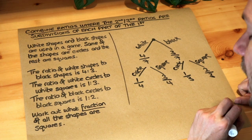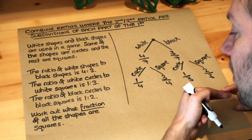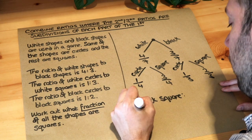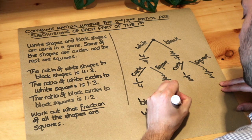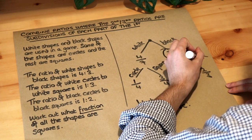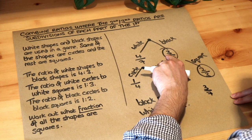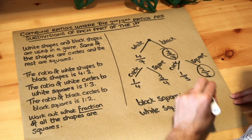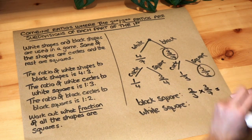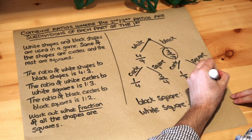Now we've got everything we need. We want to work out what fraction of all the shapes are squares. The shapes are either black squares or white squares, so let's work out each separately. For black squares: three-sevenths of the shapes are black, and two-thirds of those black shapes are squares, so two-thirds of three-sevenths. The word 'of' means multiply, so two-thirds times three-sevenths — the threes cancel — giving two-sevenths.